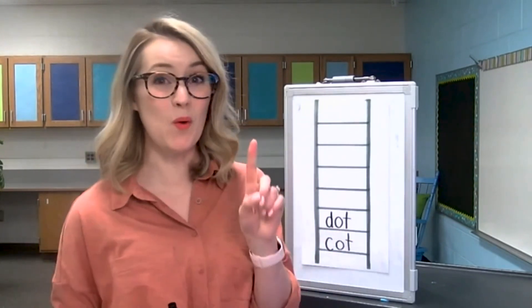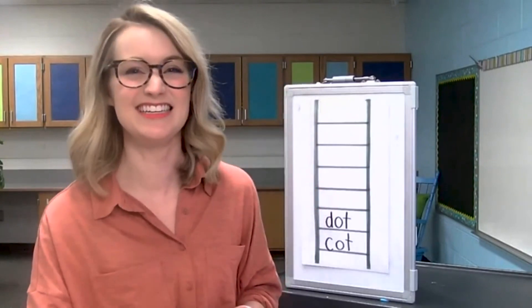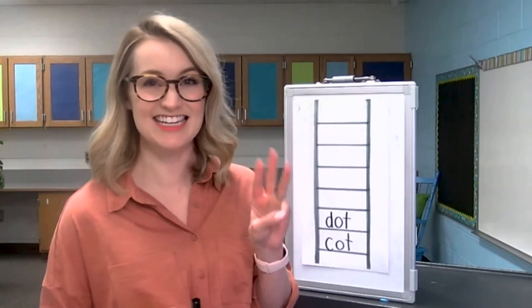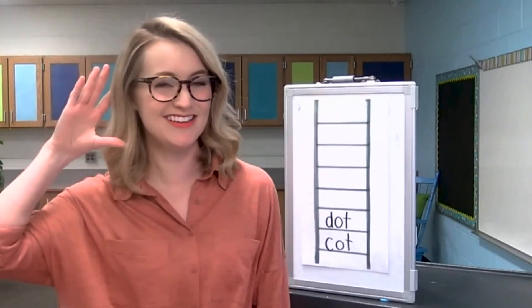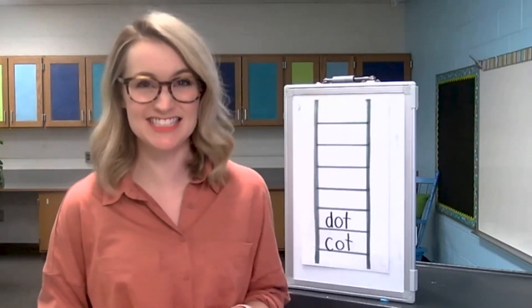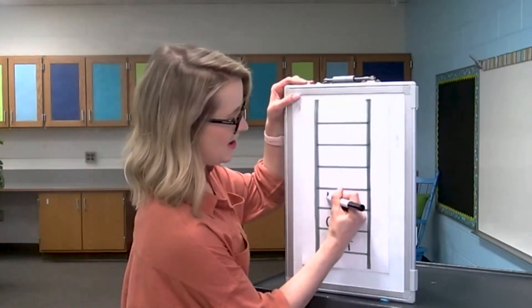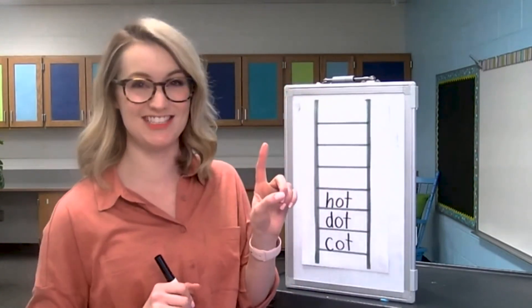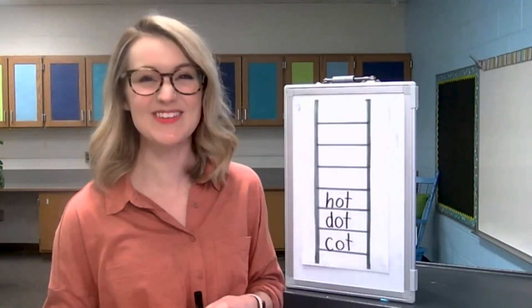Now we're going to change one letter in the word dot to make the word hot. The temperature is very hot, but it's summer. Hot. Let's listen for the sounds: H-O-T. Hot. What do you think will change to turn dot into hot? That's right, the beginning sound. Let's write it down. We're going to take out the D and put in an H: H-O-T. Take your finger and let's check it: H-O-T. Hot. Great work.